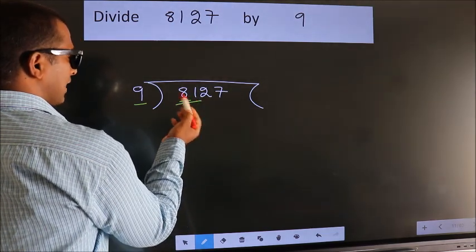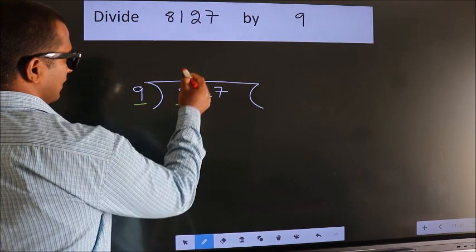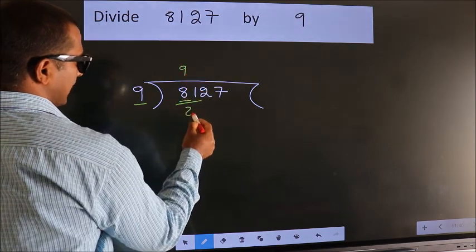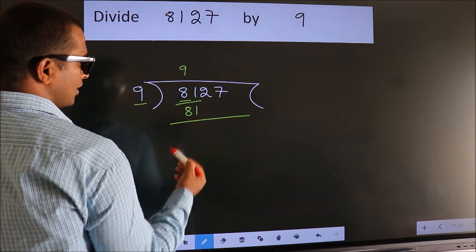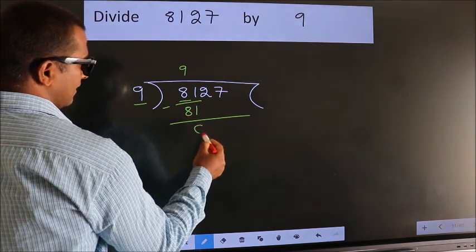When do we get 81 in the 9 times table? 9 nines are 81. Now we should subtract. We get 0.